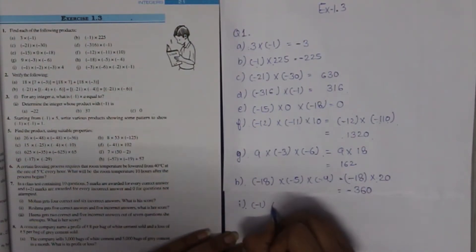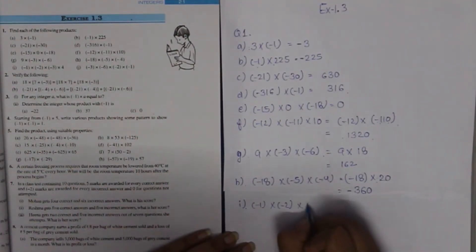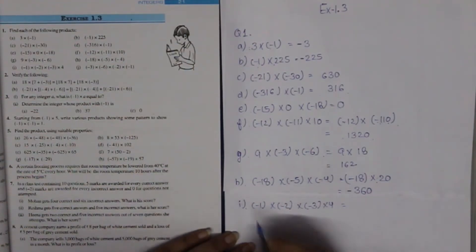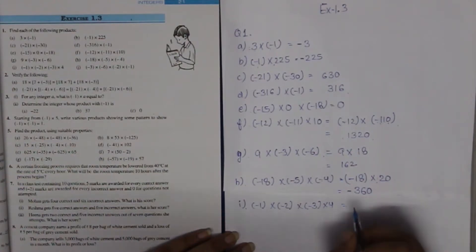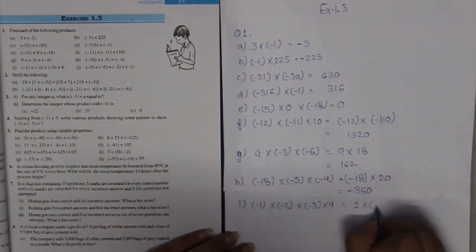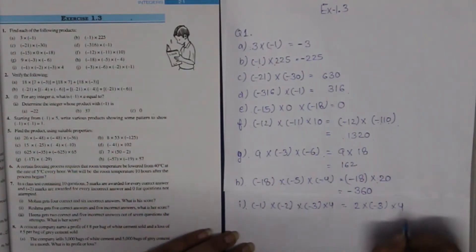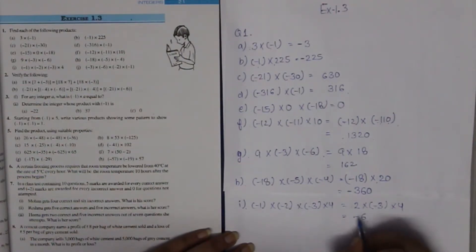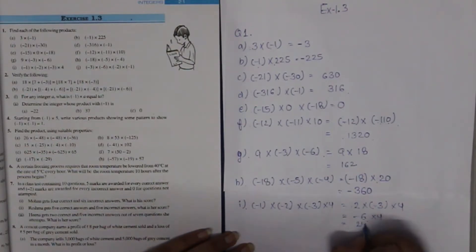Minus 1 multiplied by minus 2 multiplied by minus 3 multiplied by 4. First we multiply 1 and 2 to get 2; negative times negative makes it positive. Then positive times negative makes it negative. Next, multiplied by 4: 6 fours are 24. Positive times negative gives a negative result.